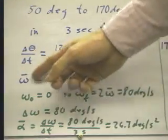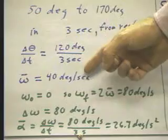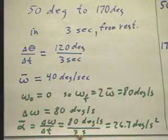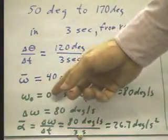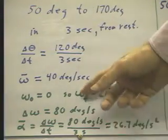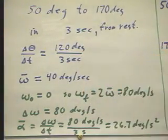We see that now we have the situation where the average angular velocity is 40 degrees per second. The initial angular velocity is zero. If the angular velocity is increasing at a constant rate, that is, if the angular acceleration is constant, then we have the familiar situation where the final velocity is double the average, in which case we'd have 80 degrees per second.